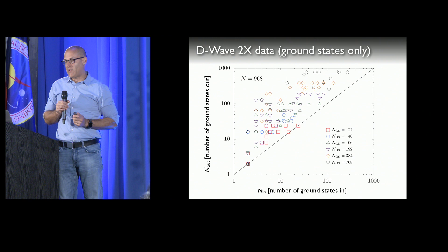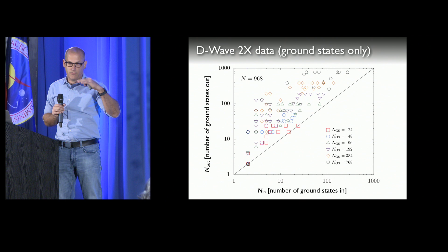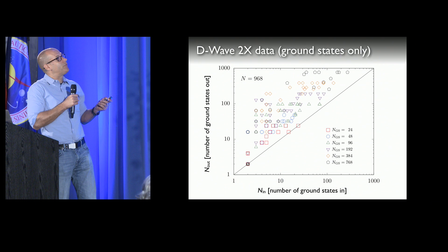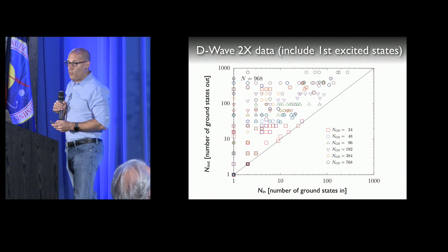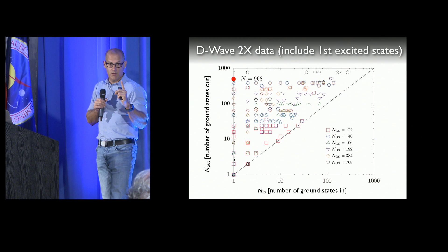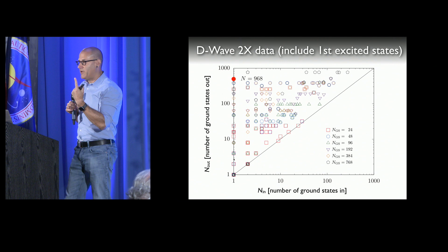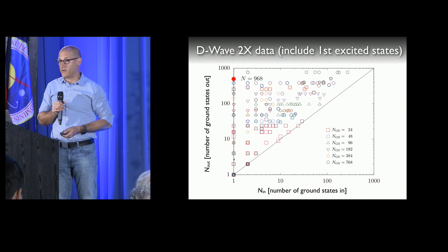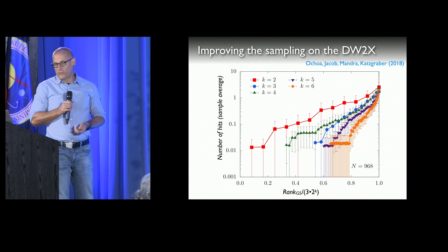If you add first excited states to the pool — and we only added first excited states here, though you can add second, third, whatever — you can see how the dots move up to the top. Most interesting are the dots on the vertical line, where we only had one ground state and added first excited states. In the highlighted case, we start with one minimizing configuration and generate roughly 700 out of it.